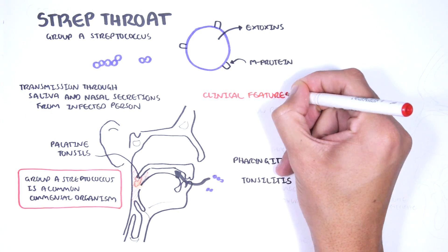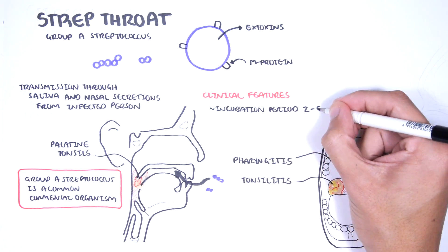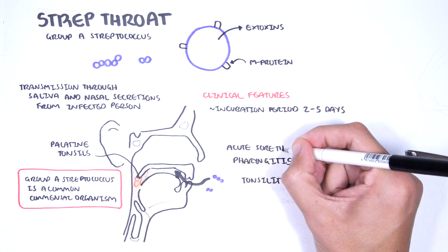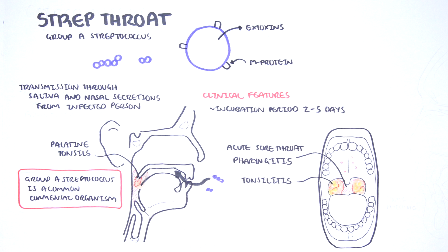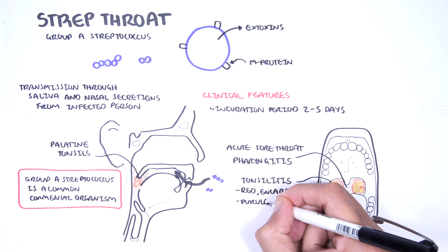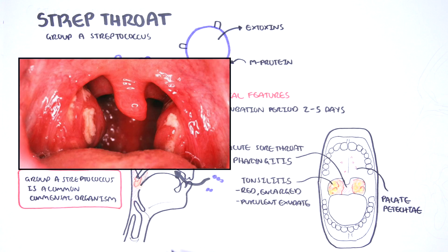The incubation period of strep throat is usually two to five days of no symptoms. When symptoms do arise, bacterial tonsillitis causes sudden onset fevers, sore throat, pharyngitis, and tonsillitis, which is reddening of the tonsils, enlargement, and purulent exudate. On the soft palate, you can also see palatal petechiae. Here again is a photo of strep throat. Note the enlarged tonsils and exudate in yellow.